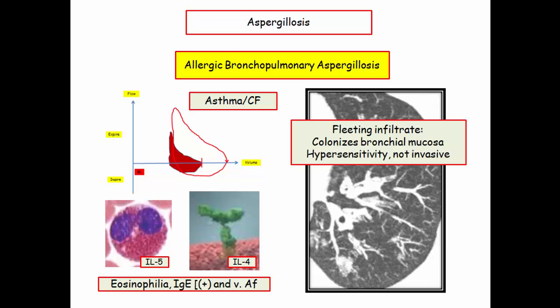Radiographically, ABPA is described by fleeting infiltrates, although mucus plugging and bronchiectasis would not be unusual as it is a disease of the airways. The classic patient is an asthmatic or a patient with cystic fibrosis. The diagnostic criteria include elevated eosinophil count with elevated IgE and the presence of IgE directed against aspergillus. The cytokines involved with recruiting eosinophils and stimulating IgE class switching are favorite targets for the NBME.